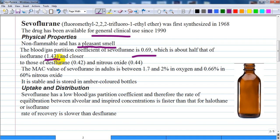It is closer to that of desflurane 0.42 and nitrous oxide 0.44. The minimum alveolar concentration value of sevoflurane in adults is between 1.7 and 2% in oxygen and 0.66% in 60% nitrous oxide.